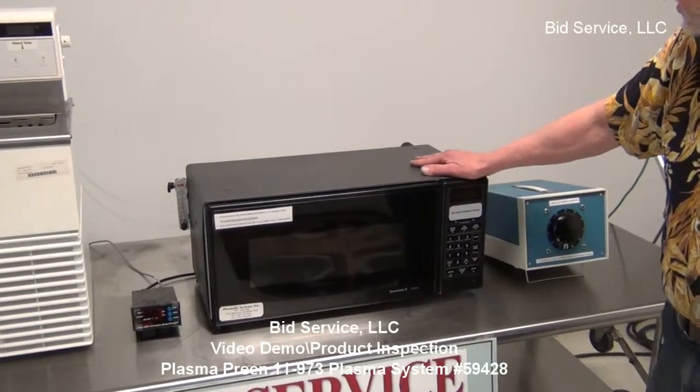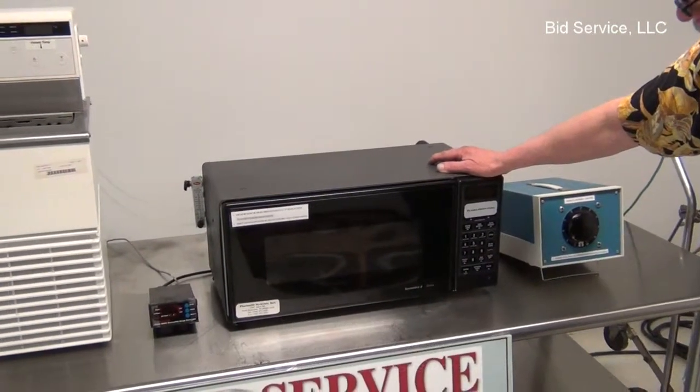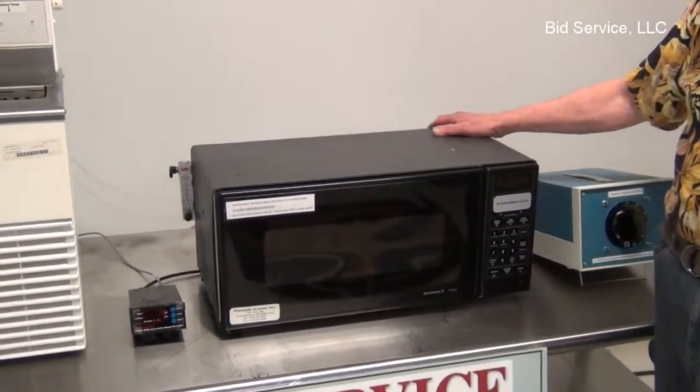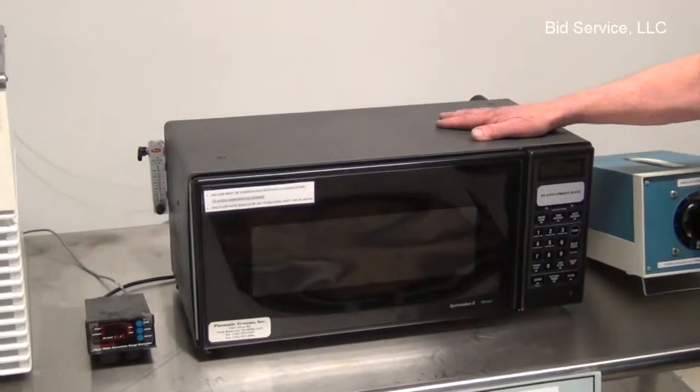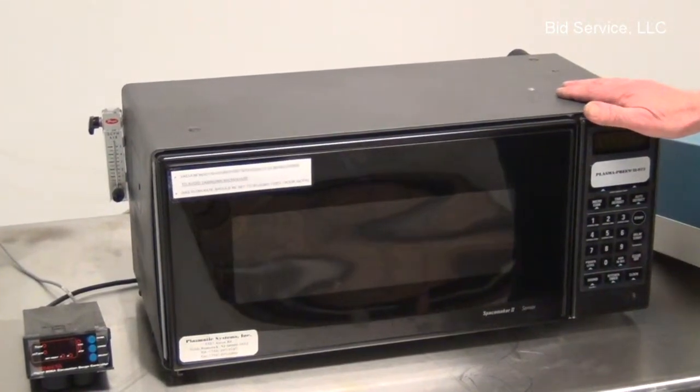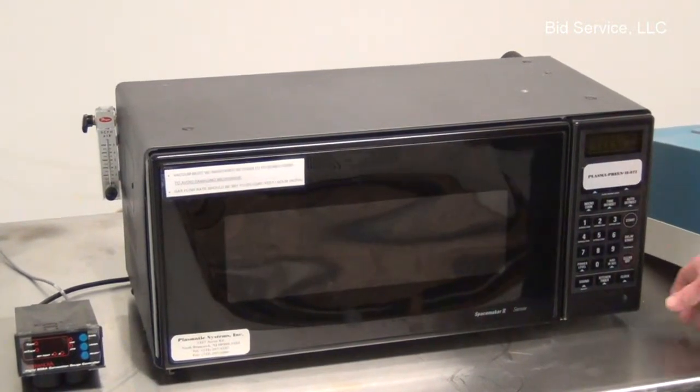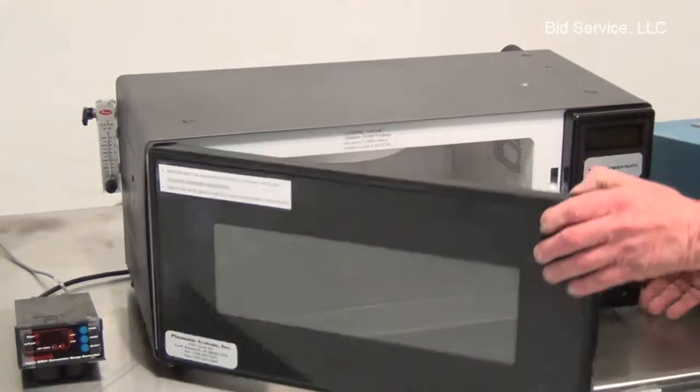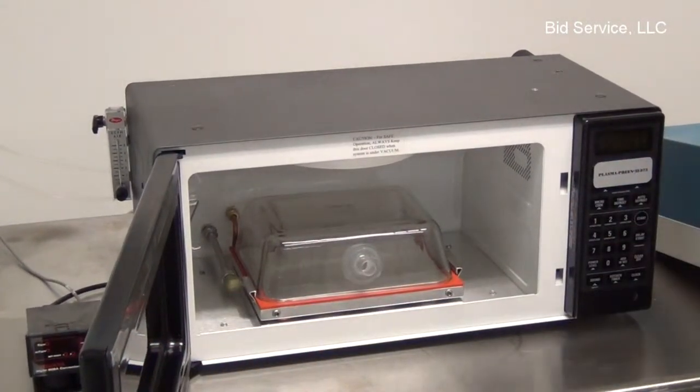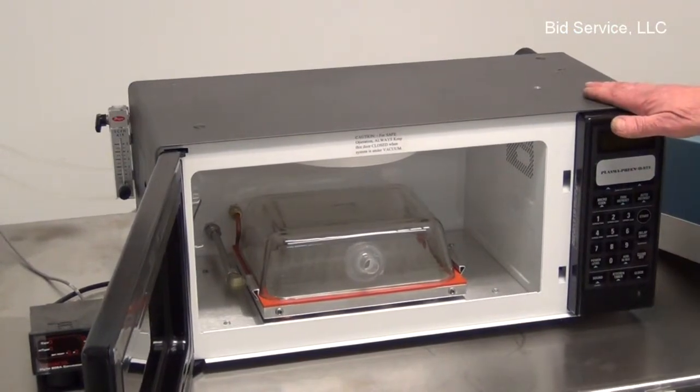This is the Plasma Preen II Plasma Etching Microwave Oven. Now, you might say that this looks like your average everyday kitchen microwave oven, and that's exactly what it is. However, with very clever engineering, this locally based company right here in central New Jersey took a standard kitchen microwave oven and adapted it for use as an actual plasma etch type piece of equipment.